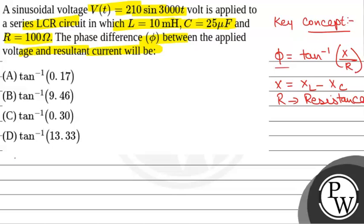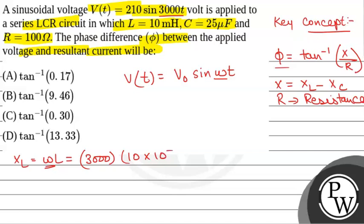Now, we will first calculate the value of XL, which is given by omega L. We have omega equal to 3000 because V(t) is written as V0 sin omega t. Comparing, we get omega equals 3000, the angular frequency. This will be 3000 multiplied by L, which is 10 mH, or 10 times 10 to the power minus 3. This equals 30 ohm. So inductive reactance XL is 30 ohm.